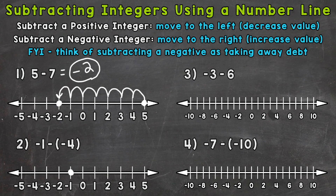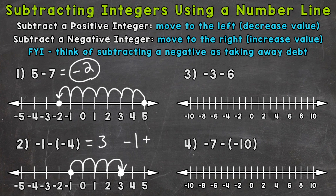We are going to move to the right four spots. One, two, three, and four. We end up at positive three, and that's our answer. When we subtract integers, we can also think of these problems as adding the opposite. So adding the opposite would look like negative one plus the opposite of negative four, which is positive four — so negative one plus four. You can think of it like that as well.